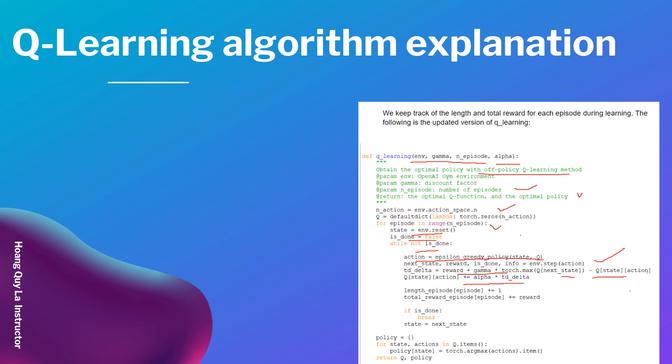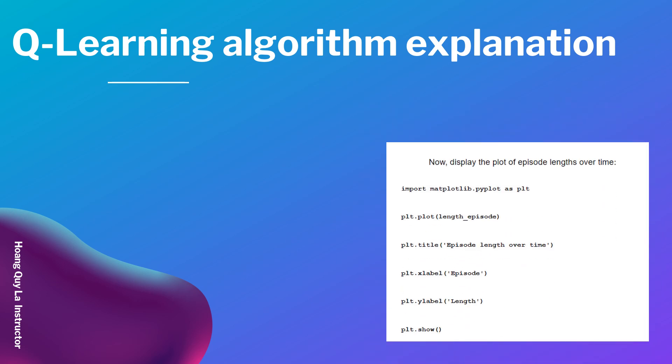Then we've got Q[state, action] plus equals alpha times temporal difference delta. We increment length_episode and total_reward_episode. If is_done, we break. State equals next_state. Then we've got policy equals empty dictionary. For each state and action in Q.items, we do policy[state] equals torch.argmax(action). Then we return Q and policy.